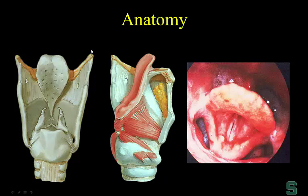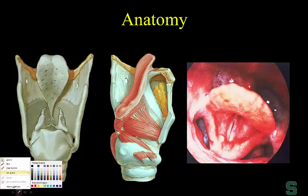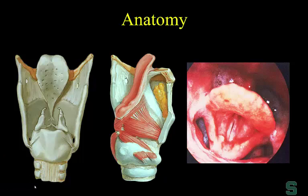Terms like cricothyroid, thyroarytenoid muscle, aryepiglottic fold, thyrohyoid notch, hyoepiglottic ligament — you're probably lost if you just hear them in isolation. But what I finally figured out is that if you understand four or five structures of the larynx, everything else follows. We were never really taught this in medical school — we spent a lot of time on the liver, heart, and brain, but hardly any time on the larynx.